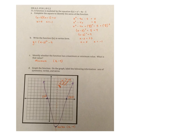Identify whether the function has a minimum or maximum value. What is that value? Well, that's my vertex. That's also what this does. Boom. It's in vertex form. Graph the function on the graph, label the following information, axis of symmetry, vertex and zeros. That is what I did down there. So there it is.